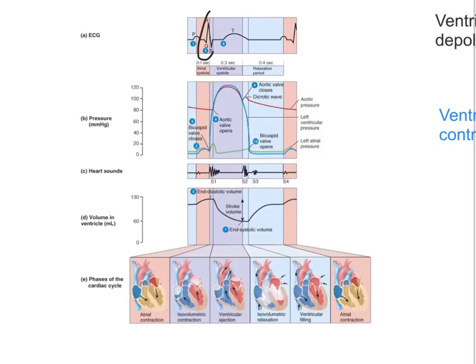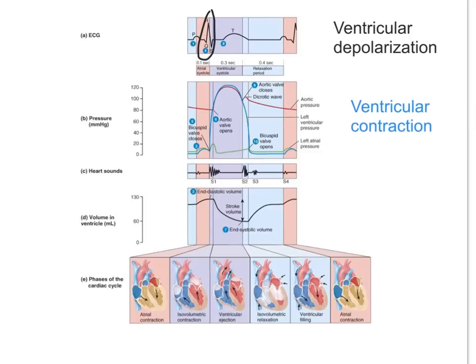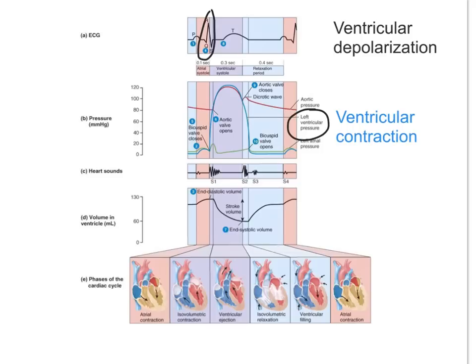The next event in the ECG is the QRS complex, remembering that that represents ventricular depolarization. The electrical activity goes through the cardiac conduction system — it's been slowed down at the AV node, giving the atria time to contract, and it now spreads through the AV bundle (bundle of His), through the bundle branches, and then through the Purkinje fibers. This leads to the mechanical event of ventricular contraction, so what we expect to see is an increase in ventricular pressure following the QRS.